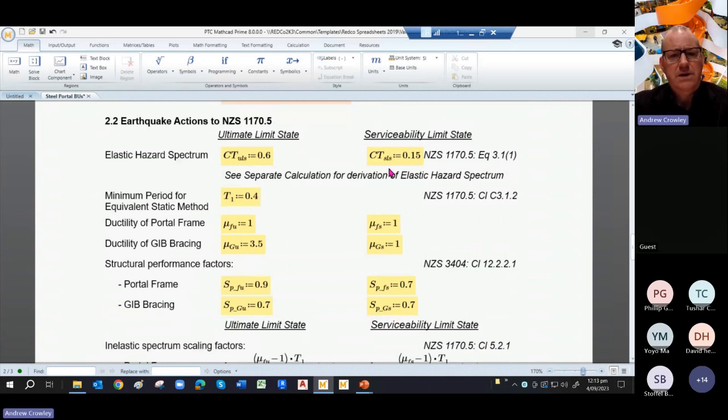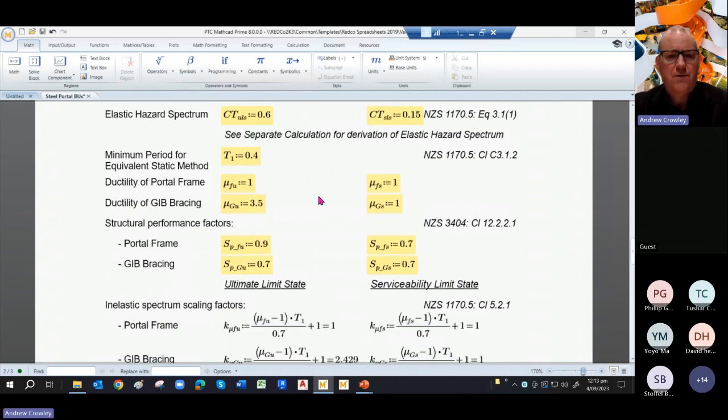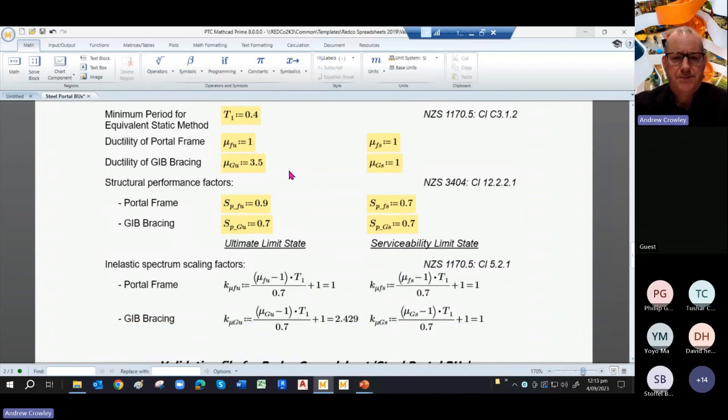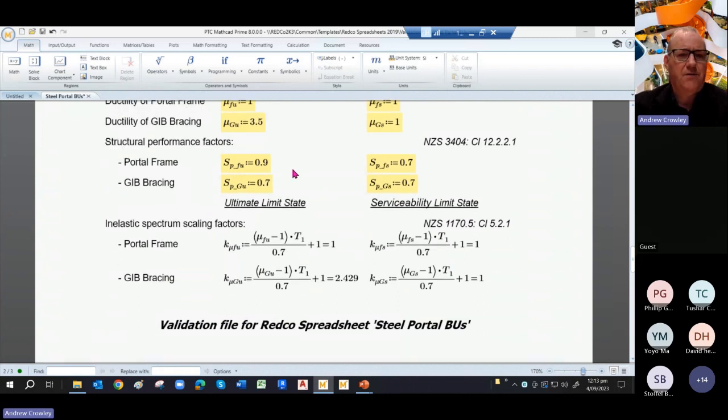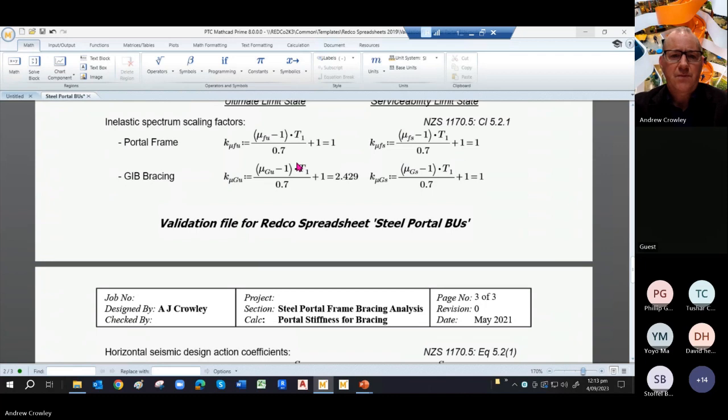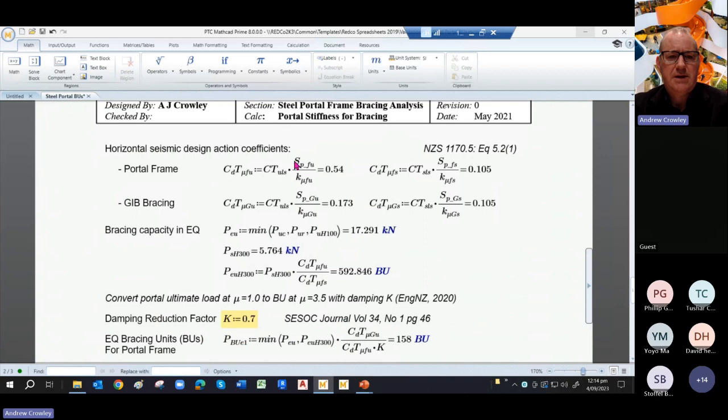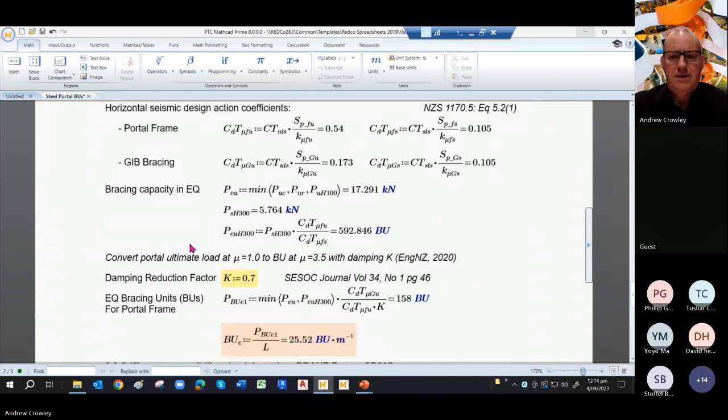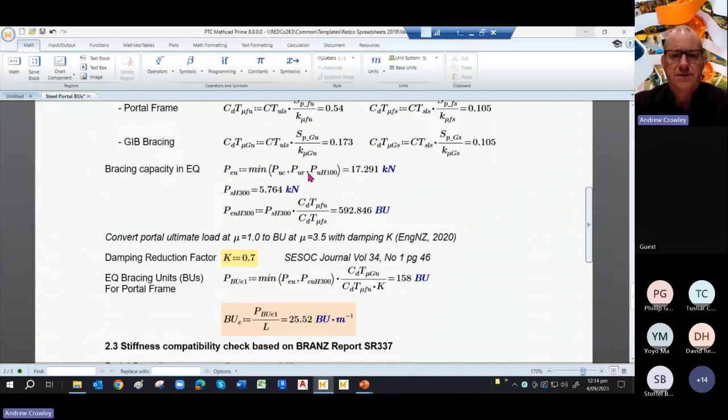So that's our wind, coming to the earthquake. We calculated the elastic hazard spectrum at both SLS and ULS from a different calculation. Again, it's a different part of the spreadsheet. We've assumed a period of 0.4. Here's our ductility for the portal frame and the jib bracing. From that we get our seismic performance factors, 0.9 and 0.7 respectively. We then get our inelastic spectrum scaling factors for the portal frame and the jib bracing. So that comes down to there.